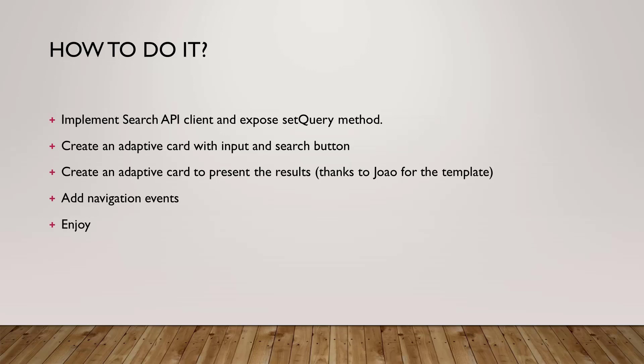Once we have that, we need to actually create the Adaptive Card Extension. I didn't pay much attention to the card itself — I'll focus on the quick view. In that quick view we need to define our search input and our search button. Thanks to John, I was able to implement — or actually copy from his solution — a very lovely quick view to render the documents that are the results. And finally, it would be nice to have navigation events, meaning if you don't like the query you entered, you can go back and enter a different query without closing the quick view itself.